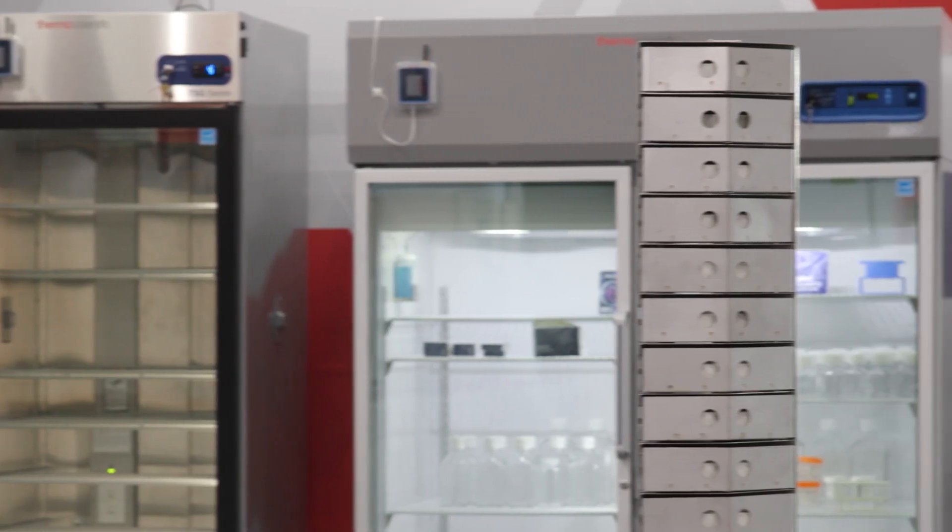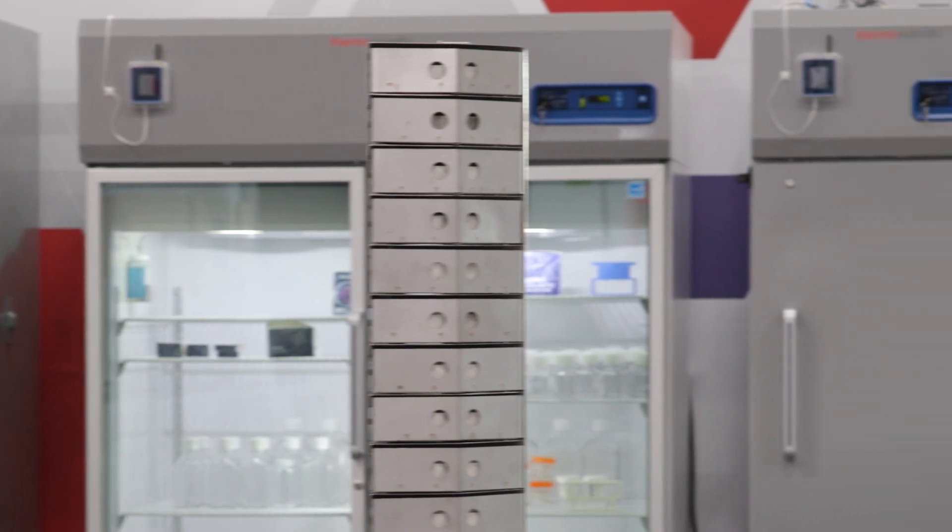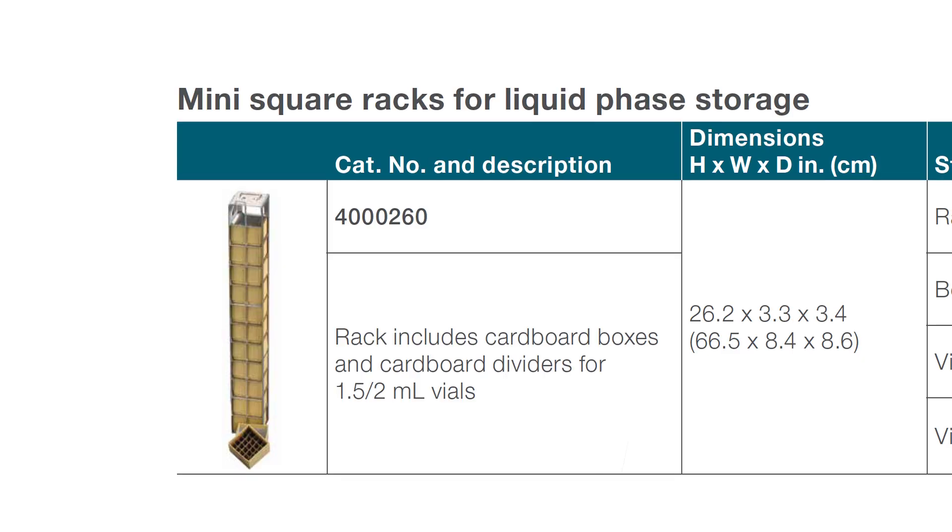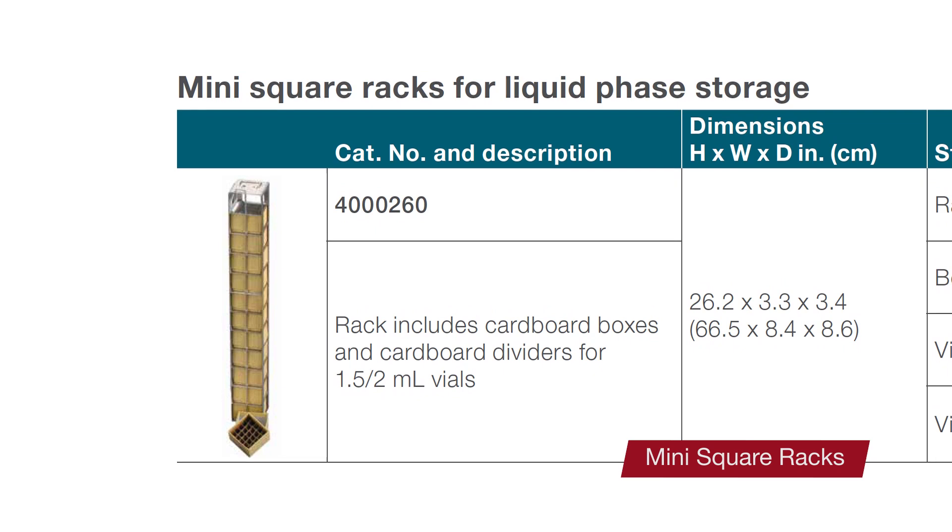And just as a reminder, the arrowhead racks and box options are only available for the CryoPlus one unit. Another specialty rack and box system accommodates smaller boxes.